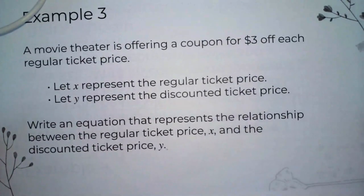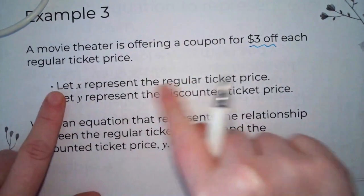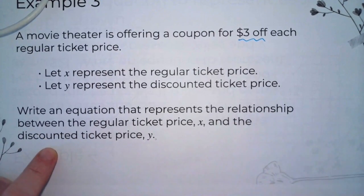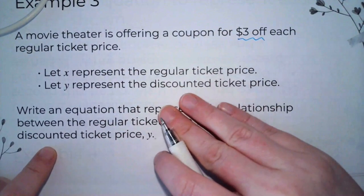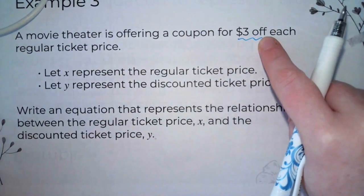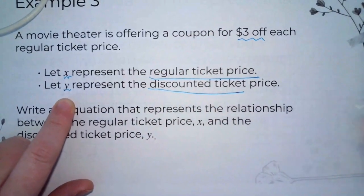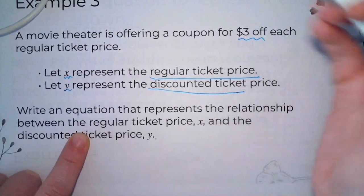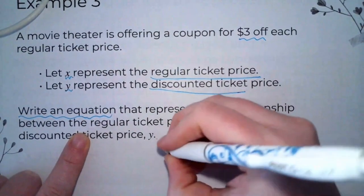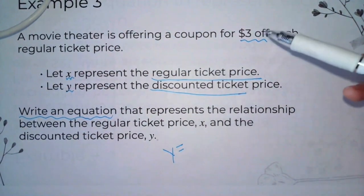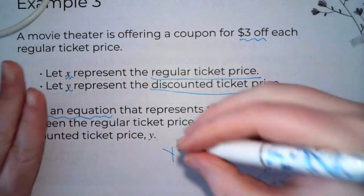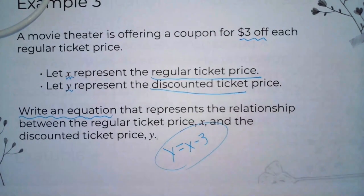Example 3: A movie theater is offering a coupon for $3 off each regular ticket. Let x represent a regular ticket and y represent the discount price. Write an equation to represent the relationship. If you're subtracting $3 — taking $3 off — you're going to say x minus 3. So y equals x minus 3.